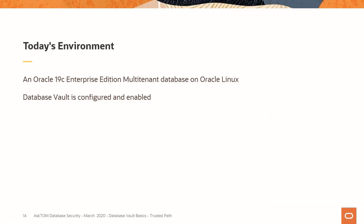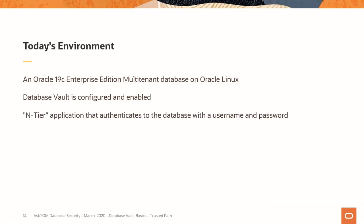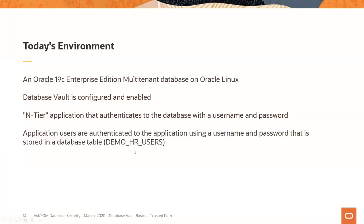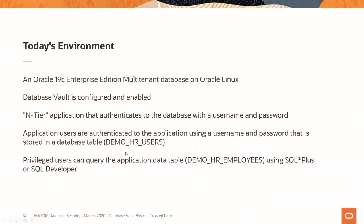My environment is a virtual machine on OCI running Oracle 19.3 Enterprise Edition — a multi-tenant database working in PDB1 on Oracle Linux. I already have Database Vault configured and enabled; there is a reboot required when you enable Database Vault in either the container or pluggable database. Our application is an n-tier or multi-tier application that authenticates to the database with a username and password — a simple Glassfish application that is intentionally vulnerable. Application users authenticate using a username and password stored in a table called DEMO_HR_USERS, and there's a primary data table called DEMO_HR_EMPLOYEES.